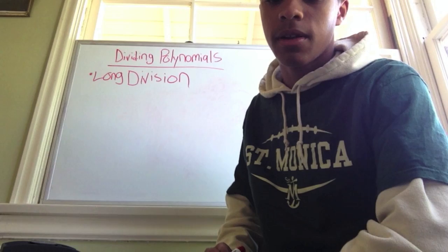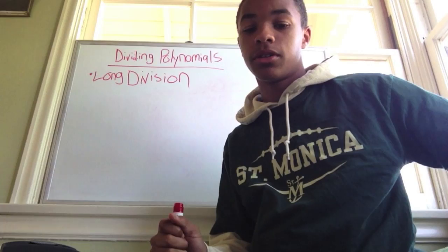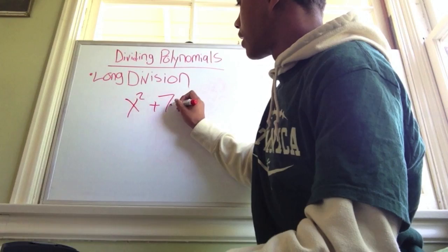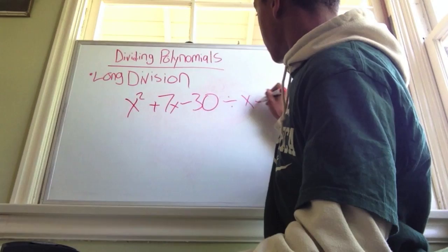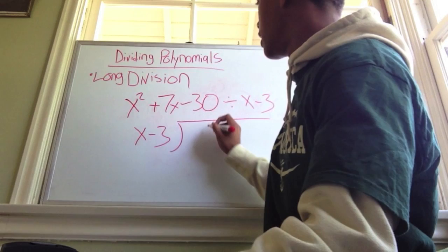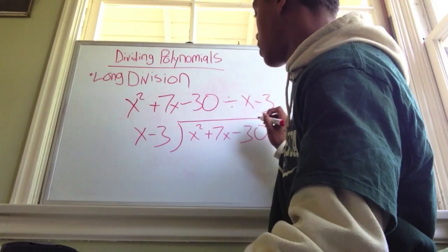Dividing polynomials by polynomials — you have to know the order. Let's start with a simple one like x squared plus 7x minus 30 divided by x minus 3. So you set up your equation by using x minus 3 on the outside, and bring down x squared plus 7x minus 30 on the inside.